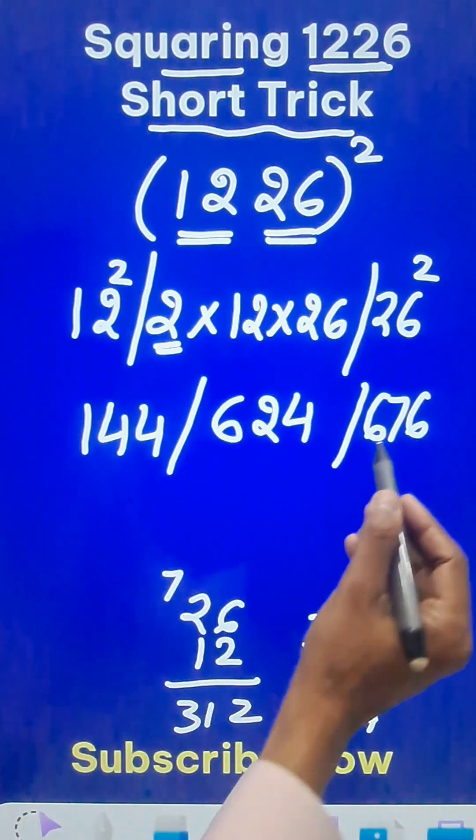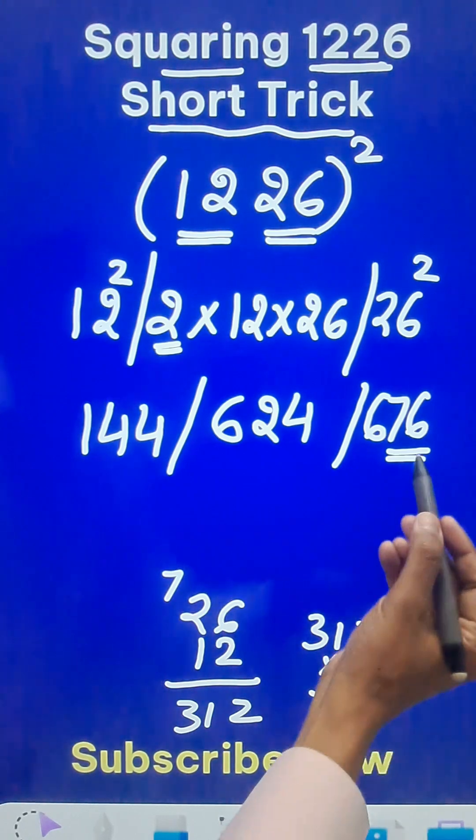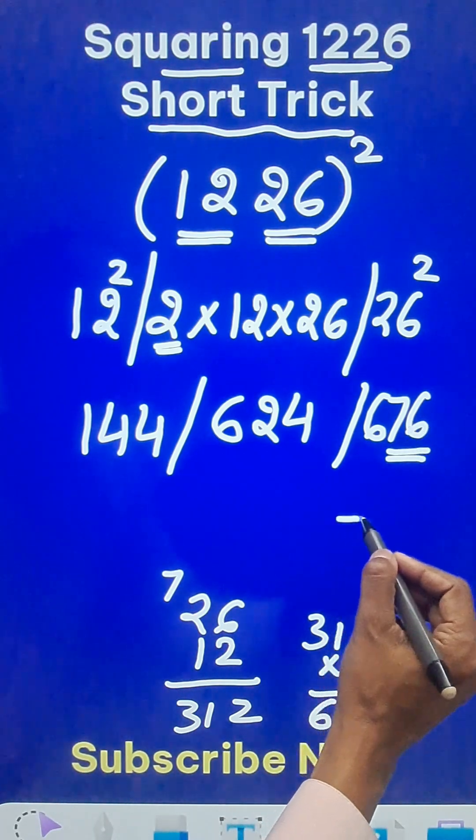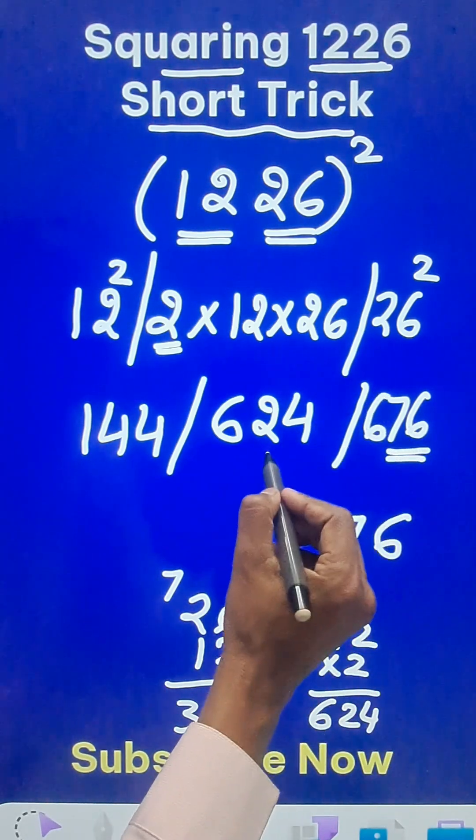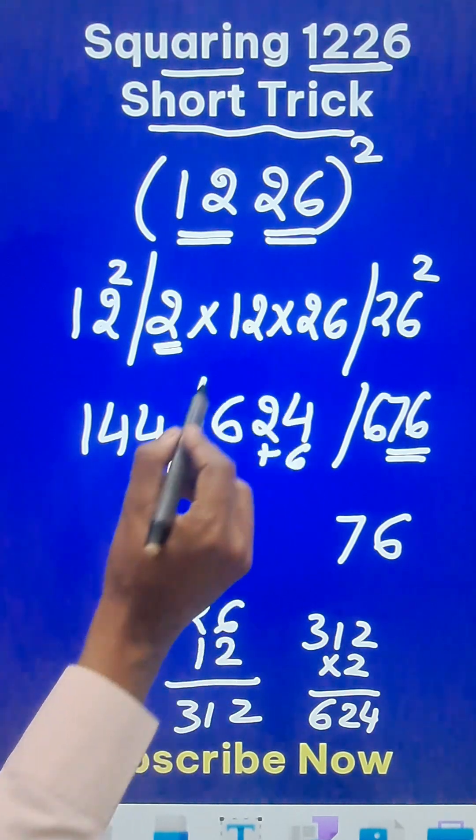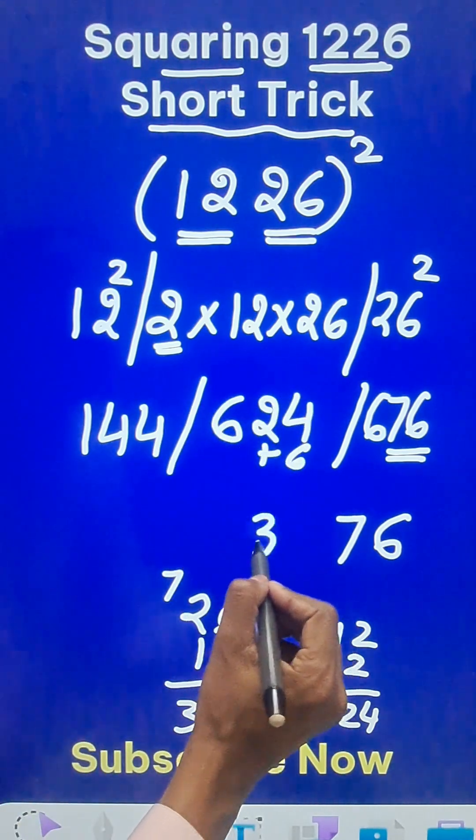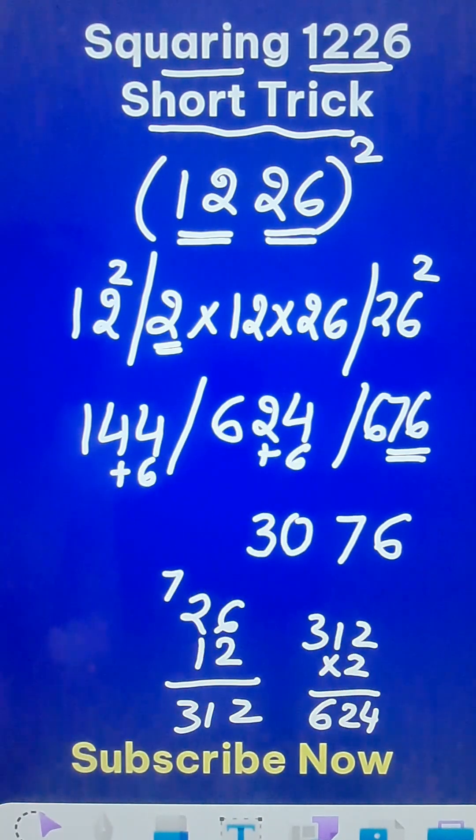Now these three numbers, you have to start retaining two digits from the right hand side. So 76 forms a part of your answer. This 6 will be added here, so this becomes 630. So 30 will be retained in the answer and 6 will be carried forward here.